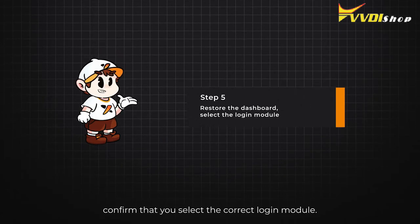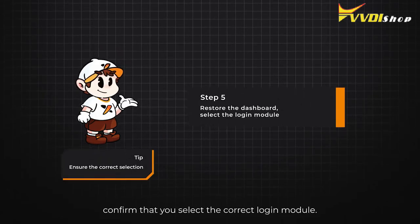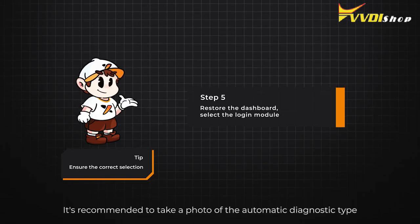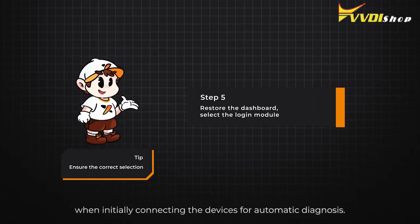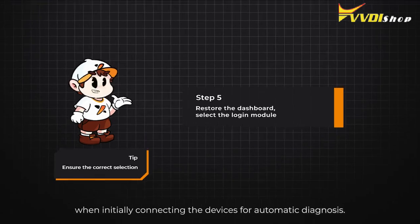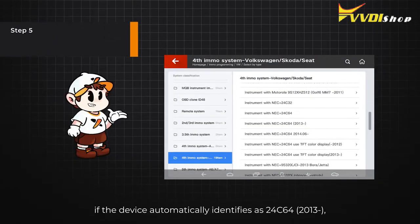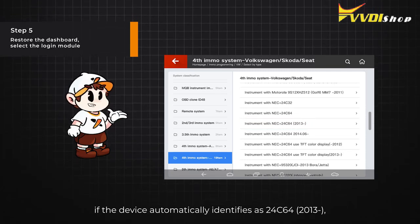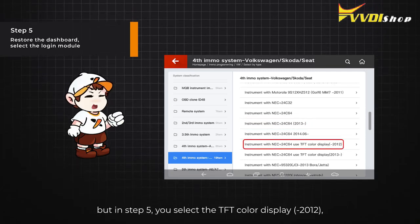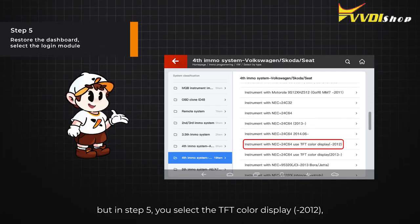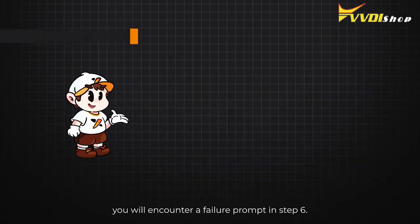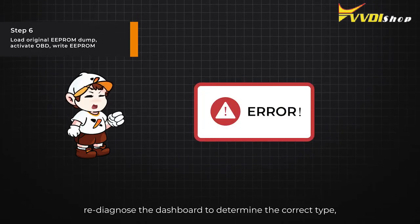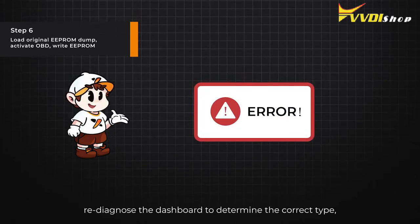In step 5, confirm that you select the correct login module. It's recommended to take a photo of the automatic diagnostic type when initially connecting the devices for automatic diagnosis. For example, if the device automatically identifies as type 2 for C6 for 2013, but in step 5 you select TFT color display minus 2012, you will encounter a failure prompt in step 6. In this case, diagnose the dashboard to determine the correct type.